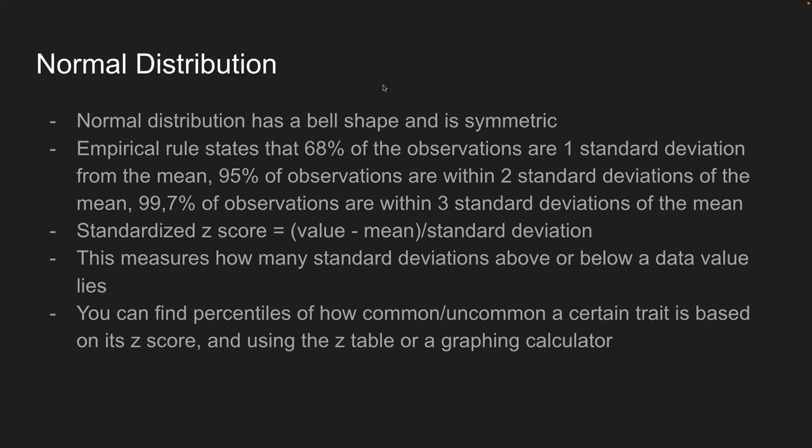The normal distribution has a bell shape and is symmetric. The empirical rule states that 68% of observations fall within one standard deviation of the mean, 95% within two standard deviations, and 99.7% within three standard deviations. You can also use the standardized z-score — the value minus the mean over the standard deviation — to find percentiles. The z-score measures how many standard deviations above or below the mean a data value lies. You use the z-score and a z-table or graphing calculator to find what percentile a value falls in.